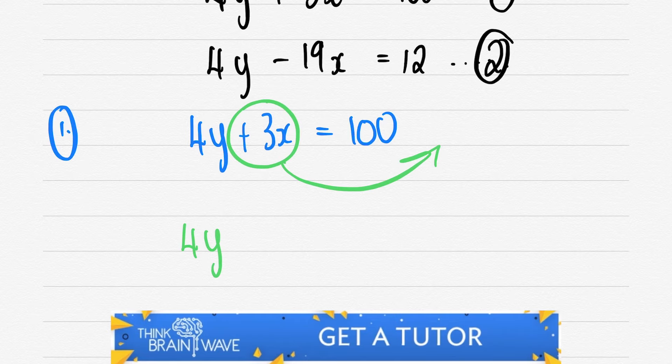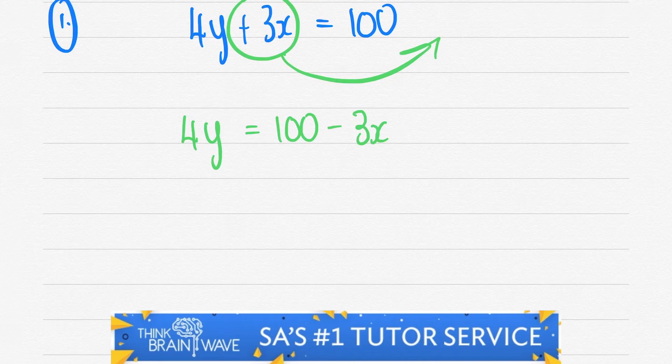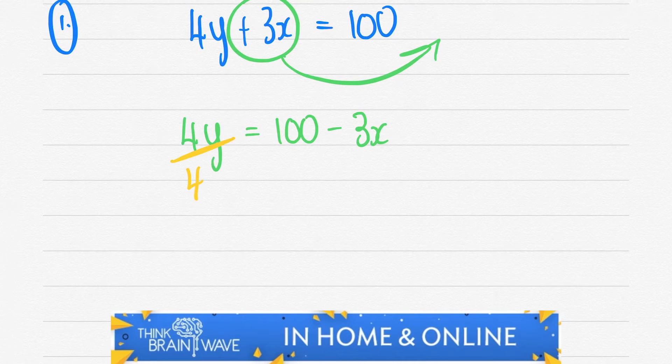So we're going to take the 3x across. When the 3x goes across the equal sign it changes from a positive to a negative. So we say 4y = 100 - 3x.